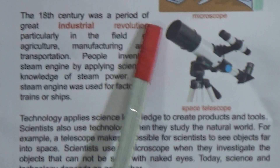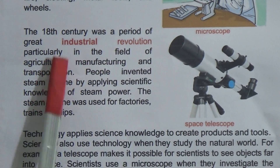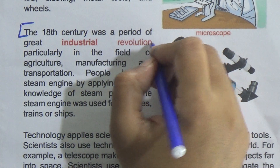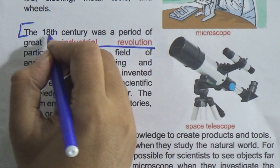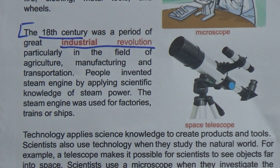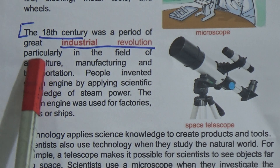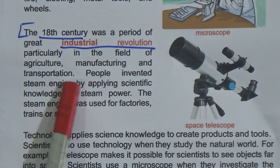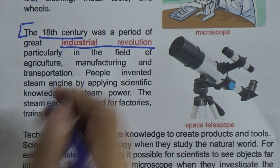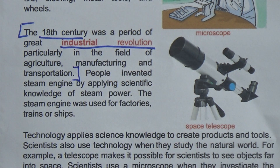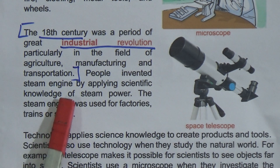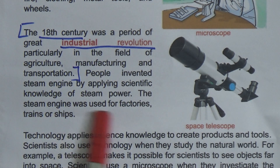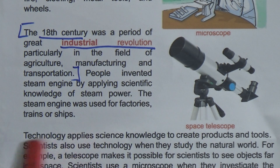The 18th century was a period of great industrial revolution, particularly in the fields of agriculture, manufacturing, and transportation. People invented the steam engine by applying scientific knowledge of steam power. The steam engine was used for factories, trains, and ships.